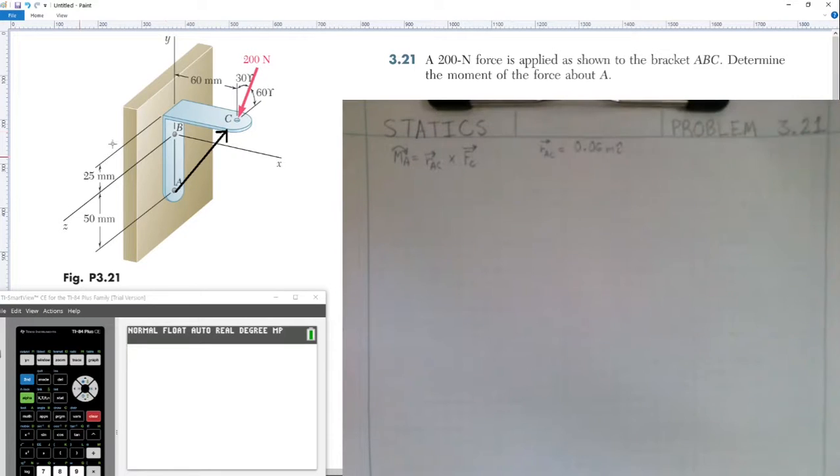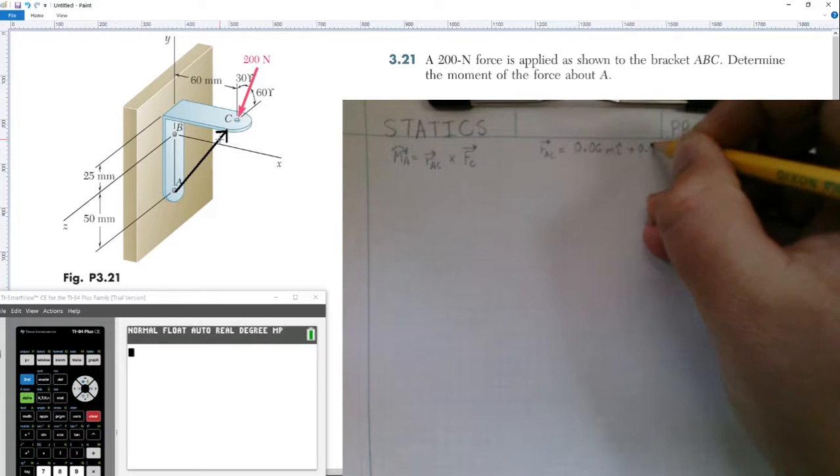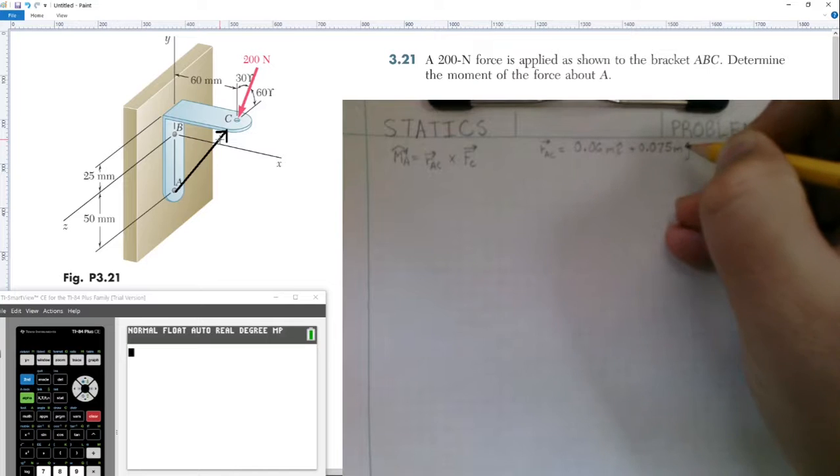Then going up in this vector on the y-axis, up a distance of 50 plus 25, which would make it 75 millimeters or 0.0075 meters in the j-hat direction. Good.